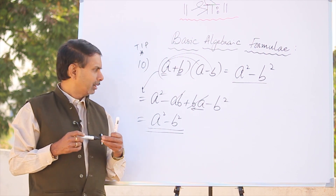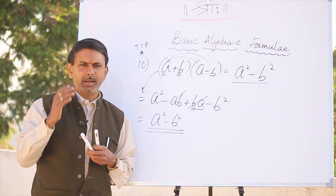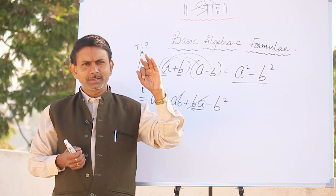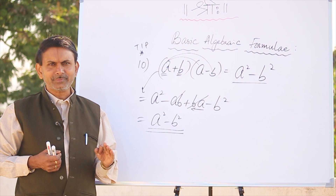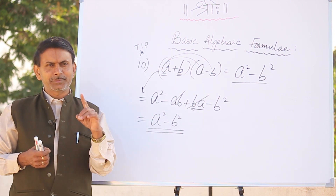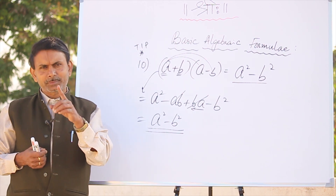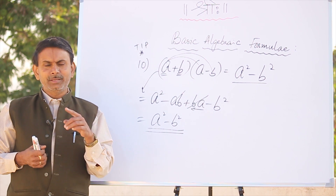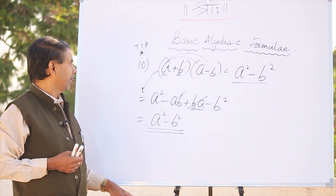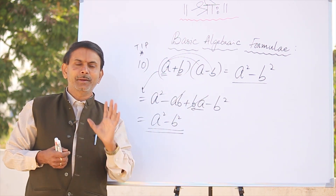In the next class, all the 10 formulas: A plus B whole square, A minus B whole square, A plus B plus C whole square, A plus B, X plus A into X plus B, X plus A into X plus B into X plus C, A plus B whole cube, A minus B whole cube, A cube plus B cube, A cube minus B cube. And last one is A plus B into A minus B equals A square minus B square.